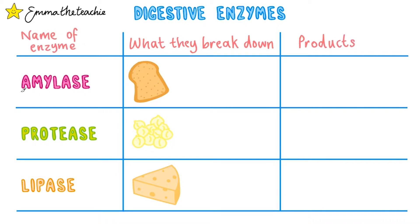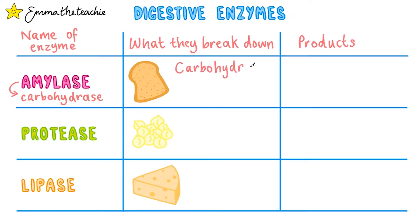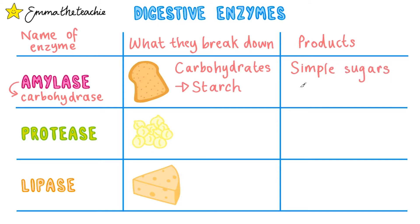First up we've got amylase, and this is an example of a carbohydrates enzyme. Taking a look at the picture, it's things like bread and pasta which we call carbohydrates. Amylase in particular breaks down the carbohydrate that's called starch — you may have heard of this already. And the products of this are simple sugars, for example glucose.